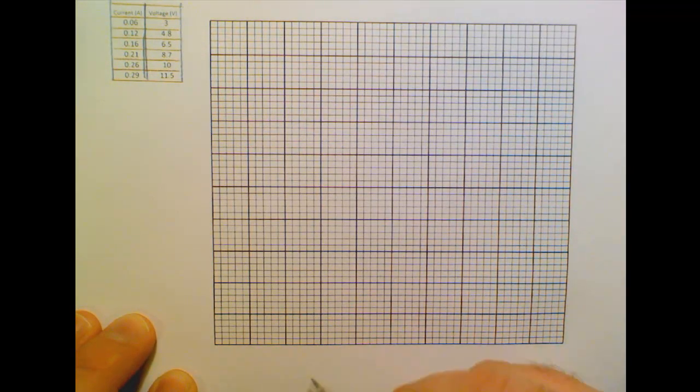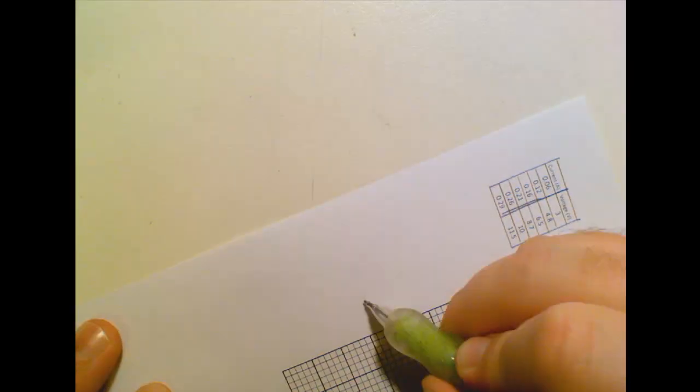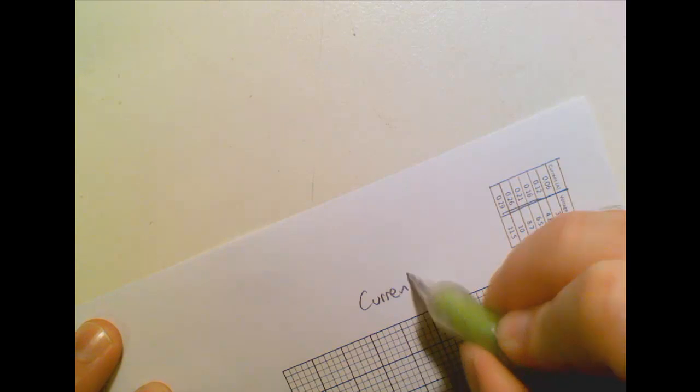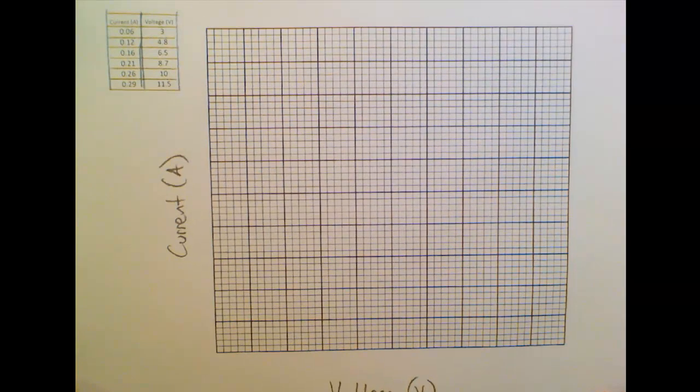So first of all, I'll label my axes. So the independent variable is the thing I changed, and that's voltage. And the dependent variable was the one I measured, and that's current. So I've put those on the axis.